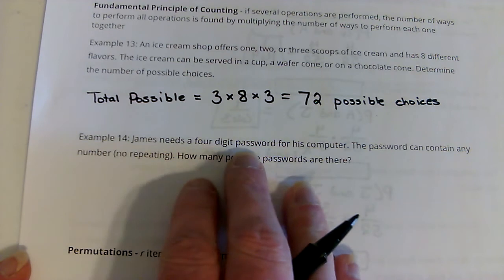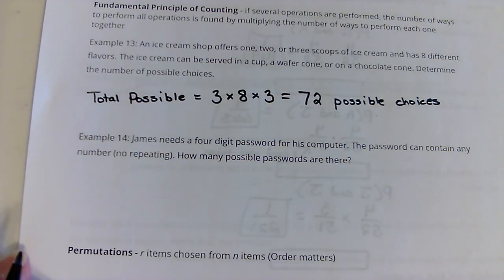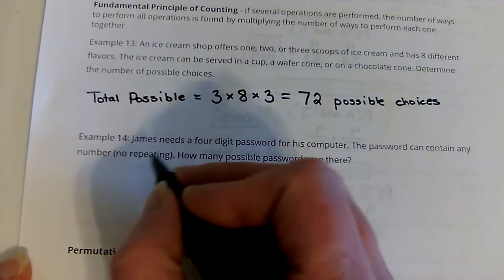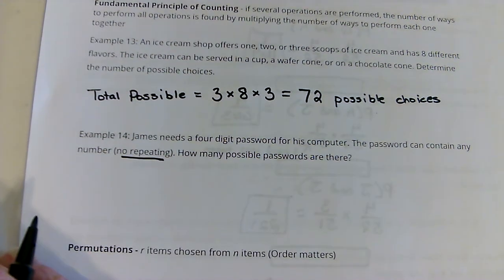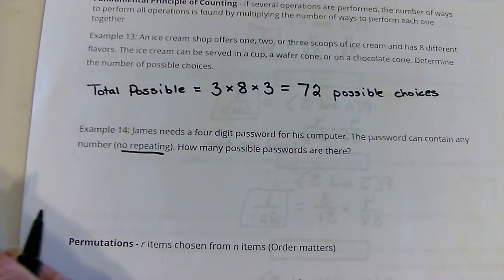Now, what about James needs a four-digit password for his computer. The password can contain any number, no repeating. How many possible, no repeating, that's important.